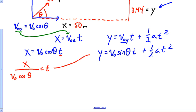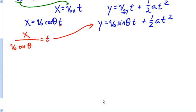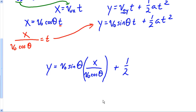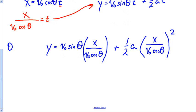Now I'm going to substitute that back into this equation. This is where it's about to start getting a little bit hairy. Y equals V0 sine theta times X over V0 cosine theta, plus one-half a times X over V0 cosine theta squared.